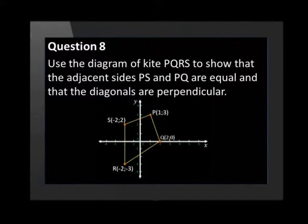You are given kite PQRS. The coordinates for point P are (1, 3). The coordinates for point Q are (2, 0). The coordinates for point R are (-2, -3). And the coordinates for point S are (-2, 2). Use the diagram of kite PQRS to show that the adjacent sides PS and PQ are equal and that the diagonals are perpendicular.